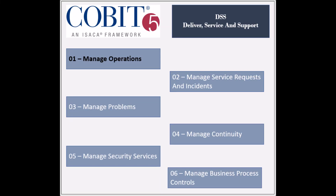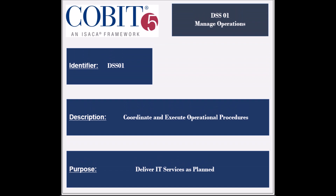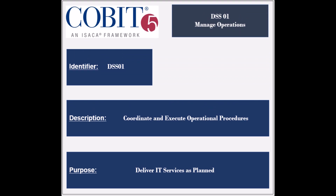The third management domain of the COBIT process is called Delivery Service and Support. The first process of this domain is called Manage Operations, with the identifier DSS1. The process focuses on coordinating and executing operational procedures required to deliver the IT services.